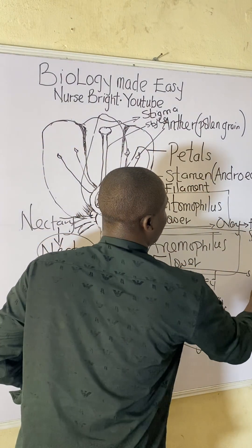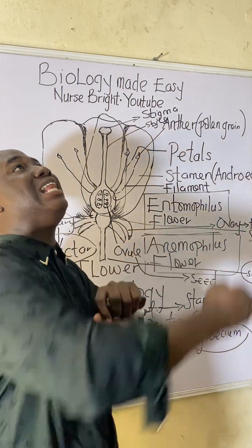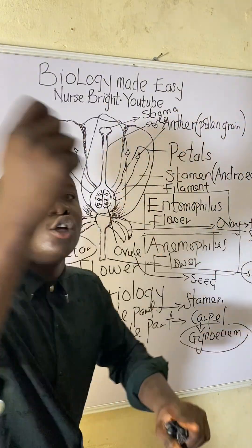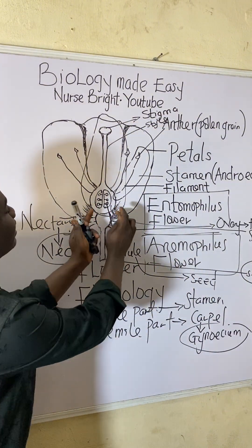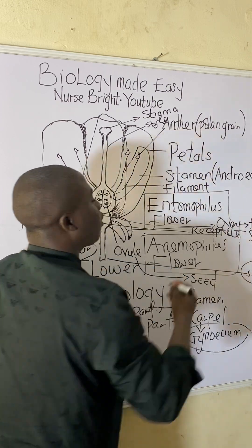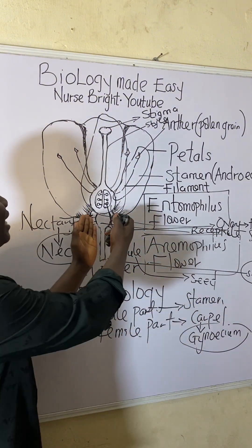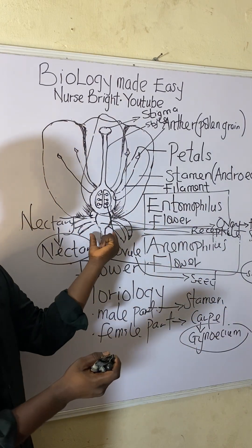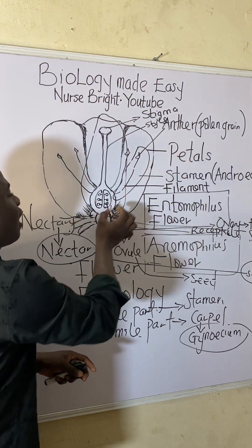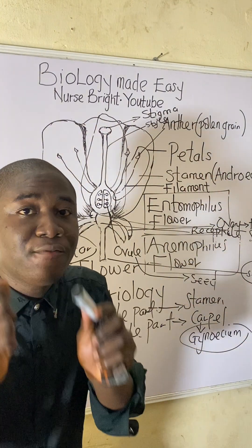This lower part is called the stem. The stem helps to support the flower and elevate it for the process of pollination, so insects can identify matured flowers to pollinate. The structure attached here is called the receptacle — an enlarged structure that supports the carpel and connects the stem to the overall flower.